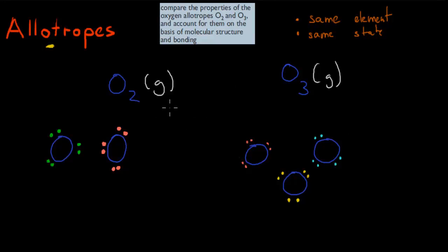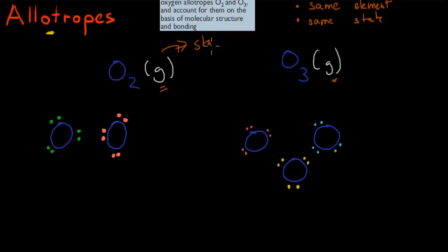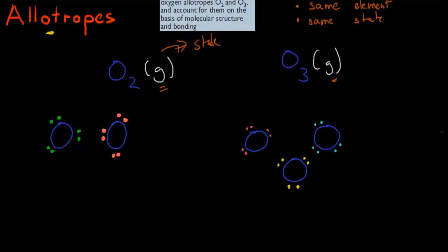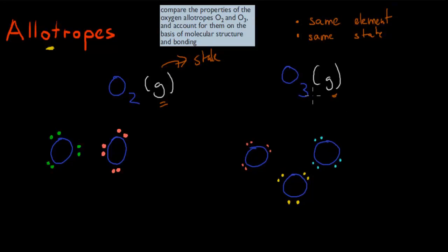That would obviously be your oxygen gas and your ozone gas. By saying they're gas, gas is the same state — a state of matter. We don't have liquid oxygen and ozone being gaseous — they're both gaseous. They're both in the same state and they're the same element. Here we just have two atoms, and here we have three. So these are allotropes of oxygen.